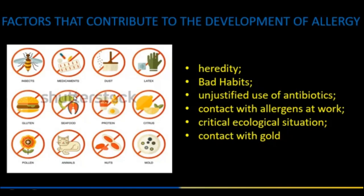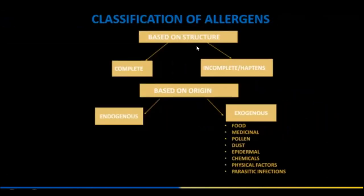Classification of allergens based on structure: complete and incomplete (haptens). Based on origin: endogenous and exogenous. Exogenous allergens include food, medicinal, pollens, dust, epidermal, chemicals, physical factors, and parasitic infections.